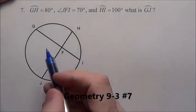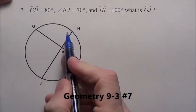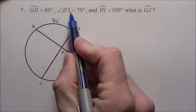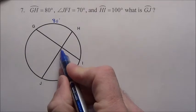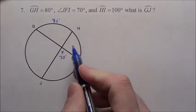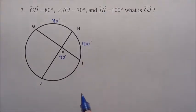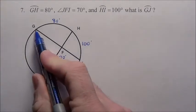Alright, problem number 7. It says arc GH is 80 degrees, angle JFI is 70 degrees, and arc HI is 100 degrees. What is arc GJ?